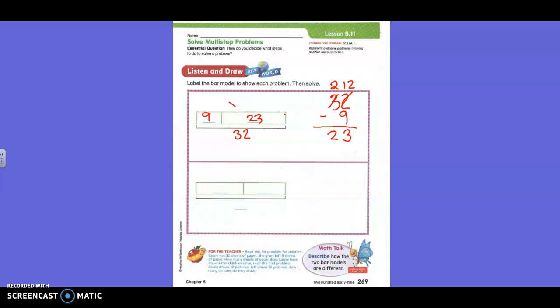Cassie draws 18 pictures. Jeff draws 16 pictures. How many pictures do they draw? This is a different one. You guys have to really pay attention. Are you ready? Cassie draws 18 pictures. Jeff draws 16 pictures. How many pictures do they draw? Do we know the total pictures they draw? No, so we're not putting any numbers down here on the bottom. How many did Cassie draw? 18. And how many did Jeff draw? 16. Okay, which one is the smaller box? Can you tell? The second one's smaller? Okay. So this would be the 16, this would be the 18?